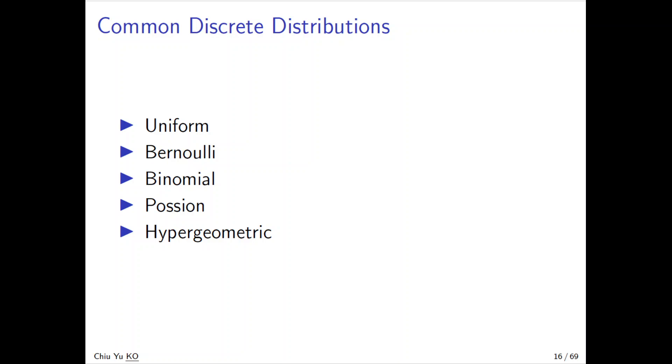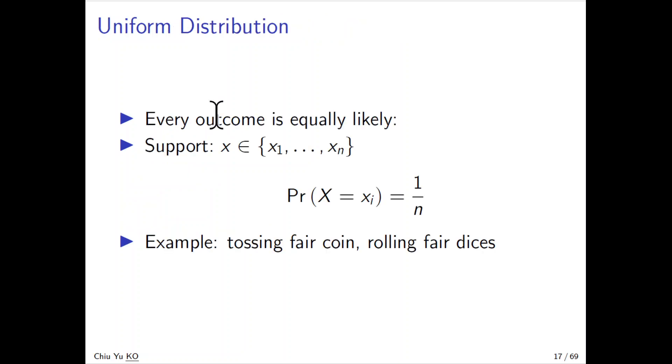Now we're going to talk about some common discrete distributions. It would be uniform, Bernoulli, binomial, Poisson, and hypergeometric. So the first one is uniform distribution.